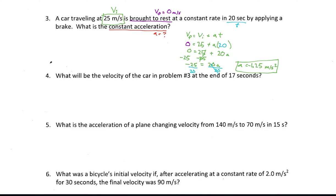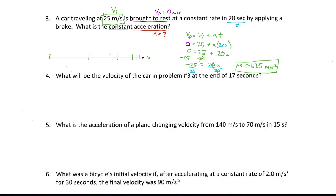If we were to draw this out, our car starts going fast in one direction, then gets slower and slower over time, covering less distance each time increment — smaller, smaller, and smaller — until there's no more distance increasing whatsoever and the car is completely stopped.